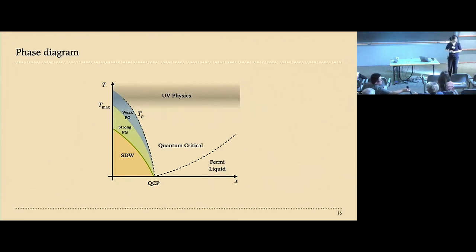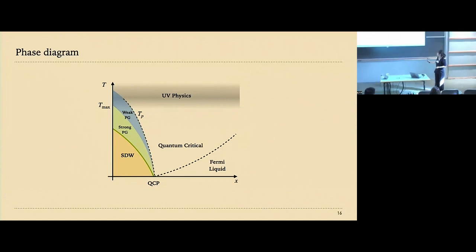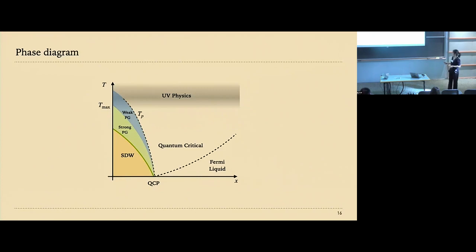Question: Do you have any comment on the pseudo-gap on the other side of the quantum critical point? Answer: Currently we are thinking about the zero-temperature calculation in that range, considering vertex corrections. When the self-energy is much greater than the Fermi bandwidth, we can do a similar procedure of pulling out the Green's function and considering vertex corrections. In that limit, we can identify pseudo-gap features, so there is a pseudo-gap feature in the Fermi liquid regime as well.